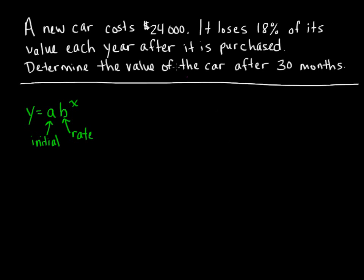In this case we're looking at a new car that costs $24,000 and the car loses 18% of its value every year after it's purchased. This is called depreciation when an object decreases in value over time. Our initial value is $24,000 so we can use that as part of our equation.